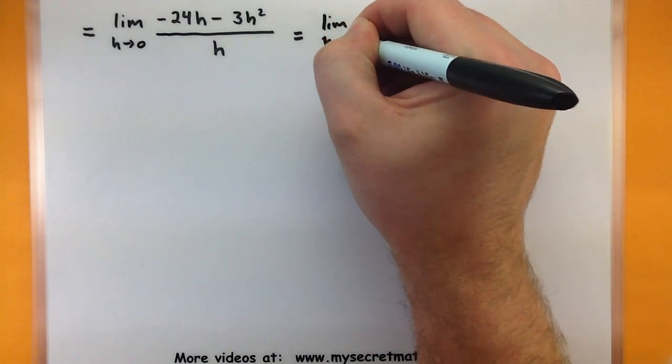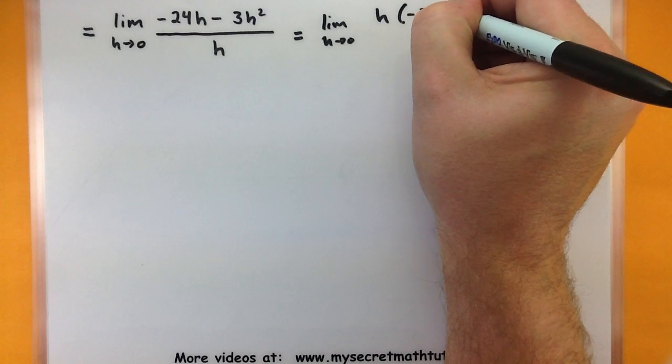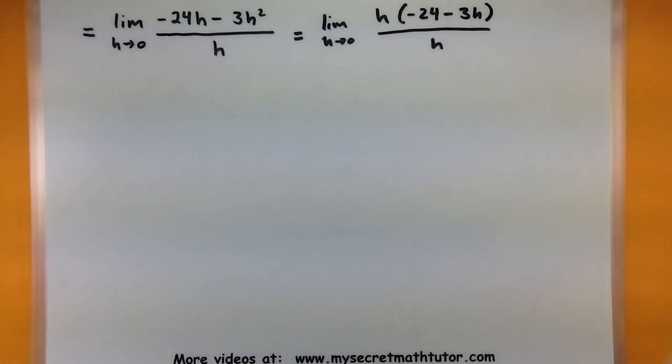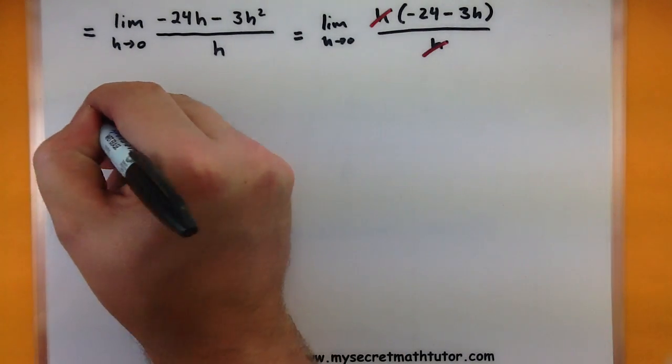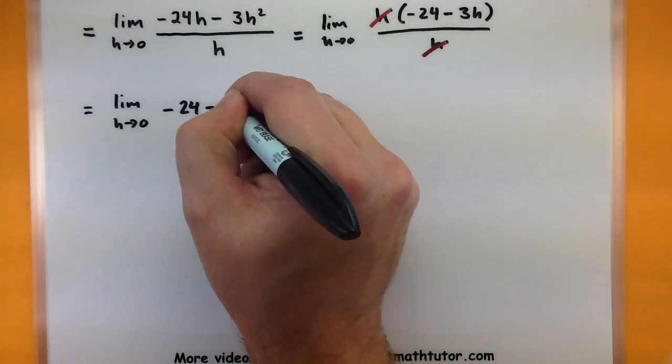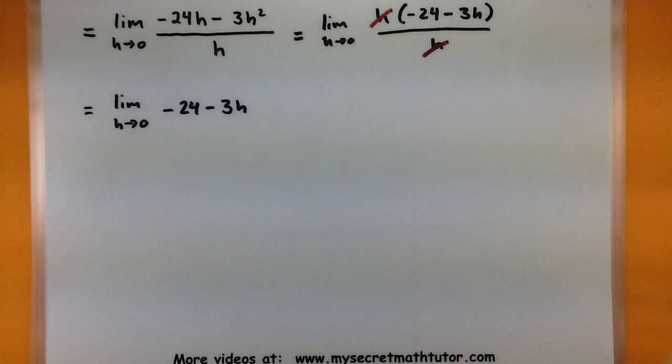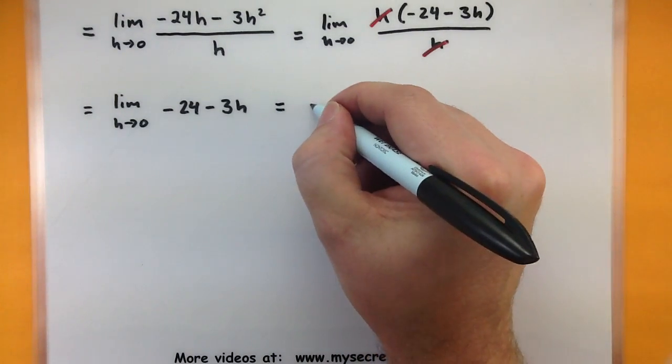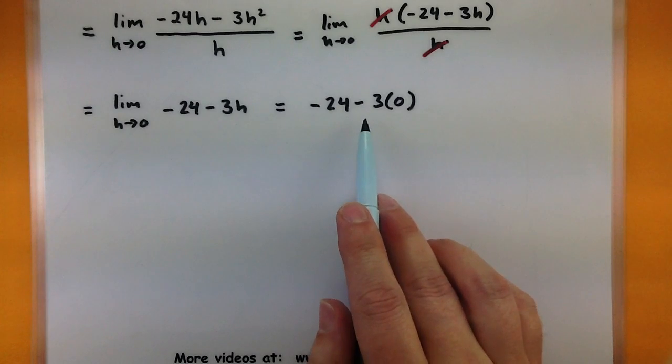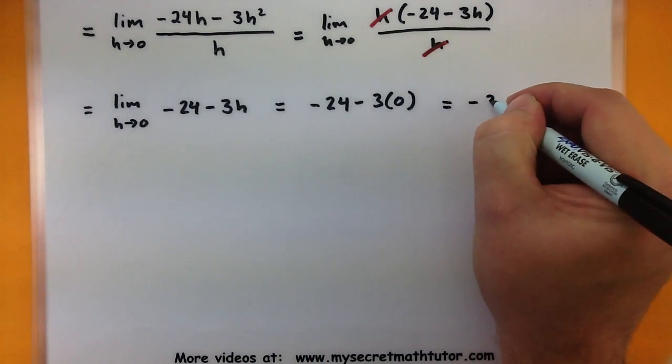So the limit as h goes to 0. Factor out an h. Let's see. -24 - 3h all over h. So we've taken it out of both of those parts. And now we can get rid of the h on the top and on the bottom. So the limit as h goes to 0 of -24 - 3h. Now that we don't have to worry about making the denominator 0, we can simply evaluate this limit directly through substitution. So this will equal to -24 minus 3, and let's plug in that 0 for h. It's looking pretty good. -3 times 0 is 0. So all of this collapses down, and we have a -24.